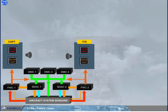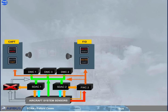The master warning lights and the master caution lights are triggered by both flight warning computers, but independently. FWC1 will turn on the captain lights and the first officer lights as shown. FWC2 will turn on the captain lights and the first officer lights as shown. Notice that in case of one FWC failure, the other FWC ensures all ECAM functions, but it will trigger only its part of the master warning and master caution push buttons.